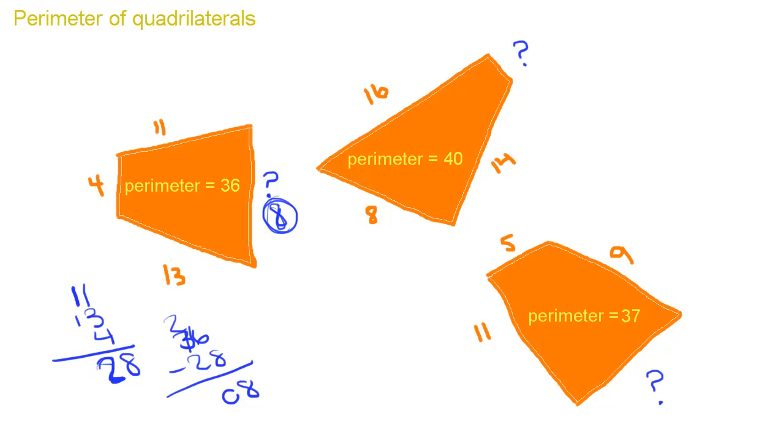Let's pick a different color. Same thing with this side. Perimeter is 40, we have 16, 14, and 8.